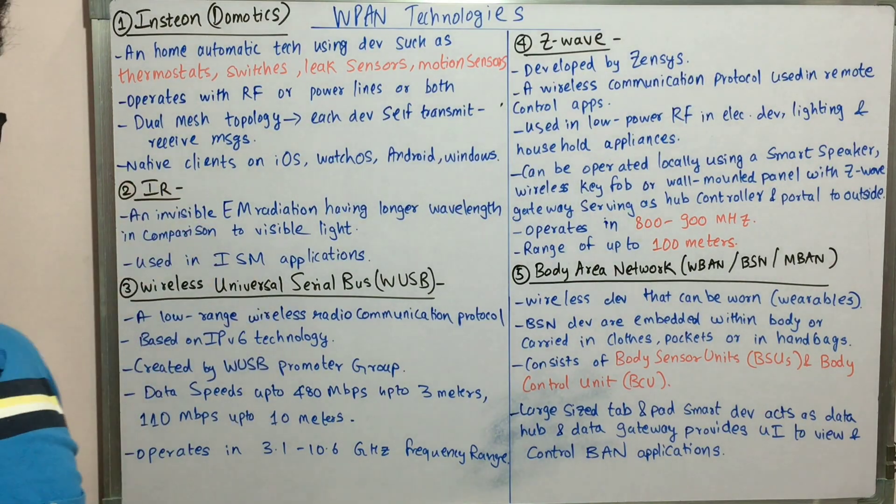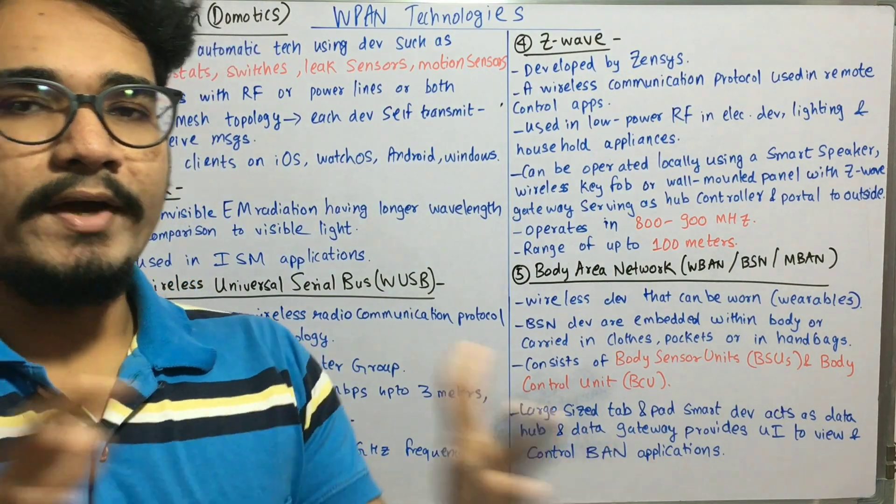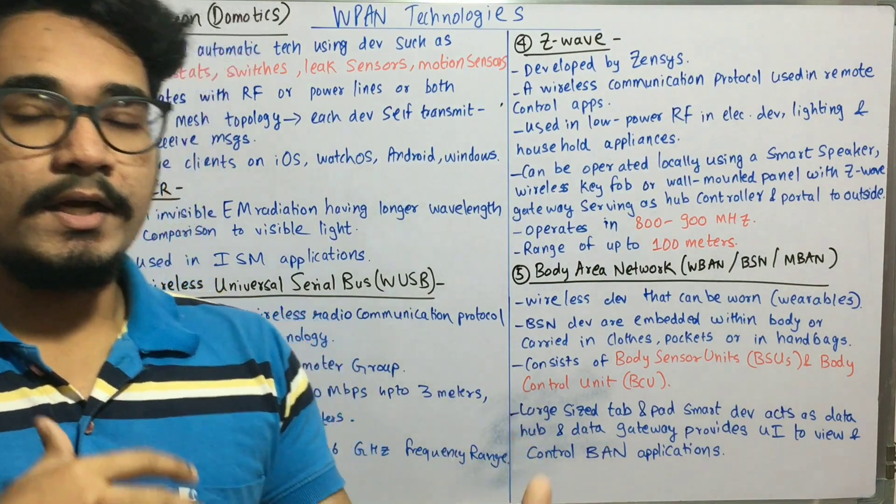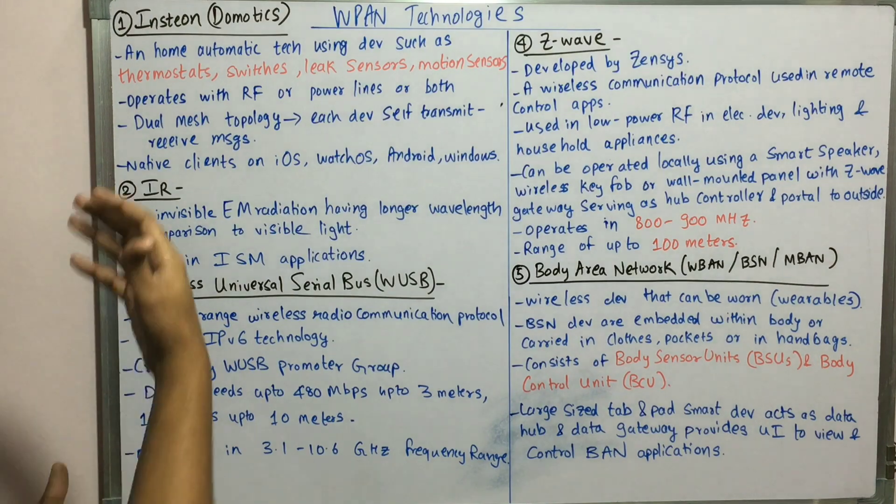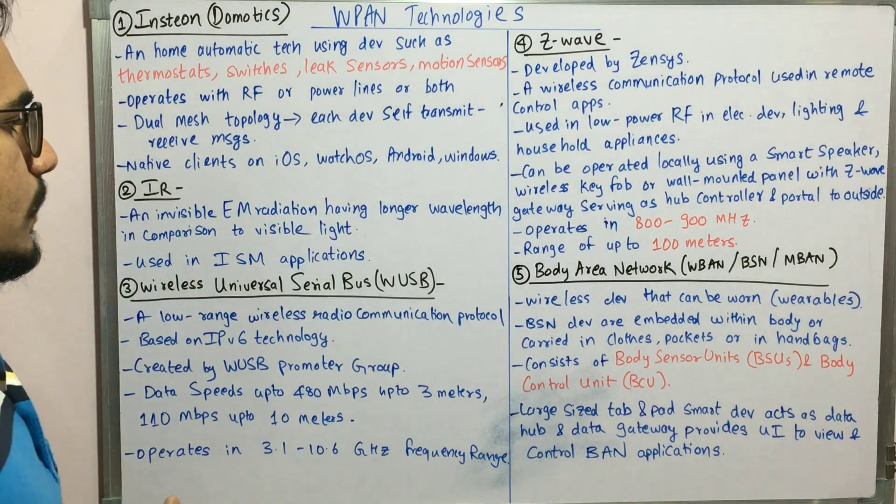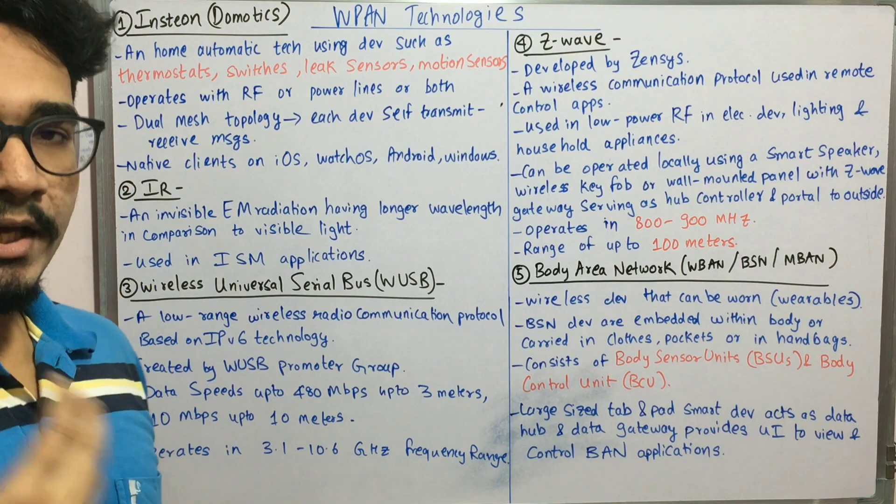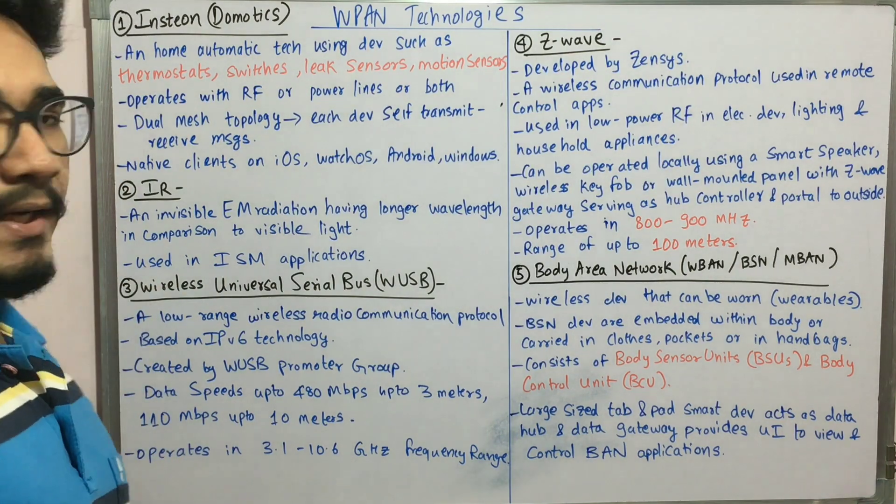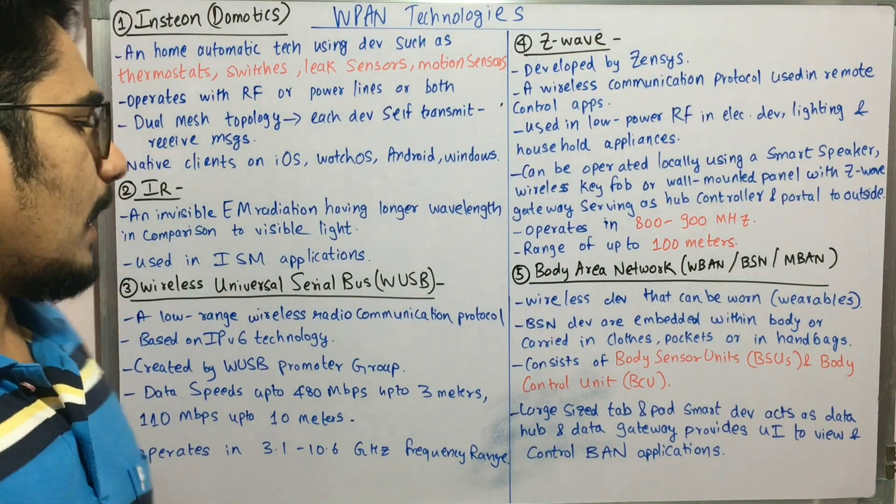Next we move on to IR, that is infrared. It's an invisible electromagnetic radiation having longer wavelengths compared to visible light, and it's used mainly in industrial, scientific, and medical applications.